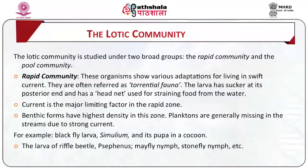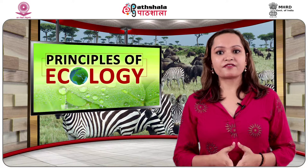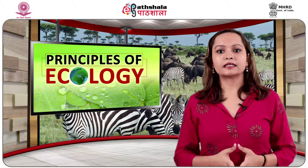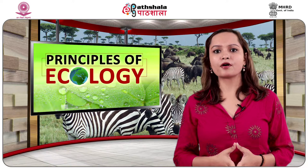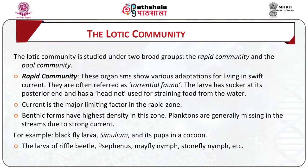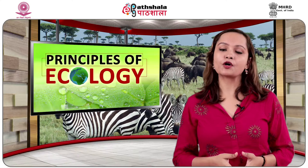The lotic community is studied under two broad groups: the Rapid Community and the Pool Community. The Rapid Community: organisms of this group show various adaptations for living in swift currents and are often referred to as torrential fauna — for example, black fly larva and its pupa in cocoon; the larva has a sucker at its posterior end and a head net for straining food from the water. Other examples include Bibiocephala larva, the larva of riffle beetle, Simulium fly nymph, stonefly nymph, etc. The current is the major limiting factor in the Rapid Zone. The type of bottom — sand, pebbles, clay, bedrock or rubble rock — is very important in determining the nature of communities and population density. The biota of the rapid zone is highly clumped due to the absence of firm substrate; benthic forms have the highest density in this zone. Planktons are generally missing in streams due to strong current.